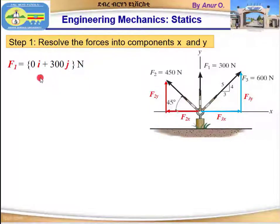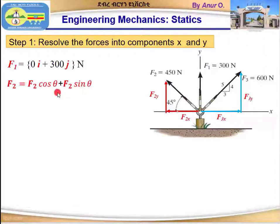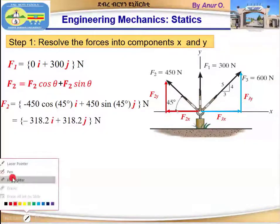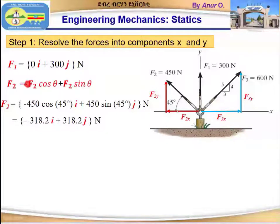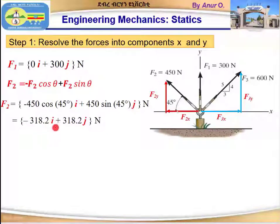F1 can be expressed in Cartesian vector form as 0i + 300j newtons. F2 is equal to F2·cosθ i + F2·sinθ j. We use cosine for F2x because for 45 degrees, the adjacent side corresponds to F2x. We must make F2x negative because F2x is acting in the negative direction of the x-axis. Substituting the value of F2, we get −318.2i + 318.2j newtons.